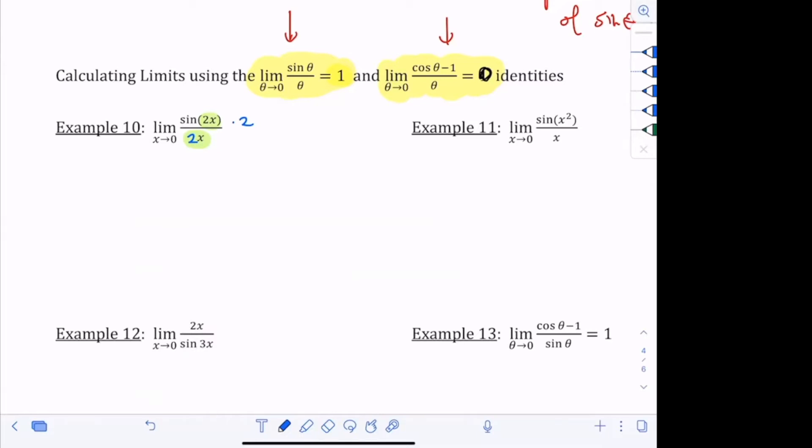Now, I hope you guys can see, I have the limit as x goes to 0, sine of 2x over 2x times 2. This part goes to 1 using the identity. We have times 2 and then you get an answer of 2. So that's how we do that one.